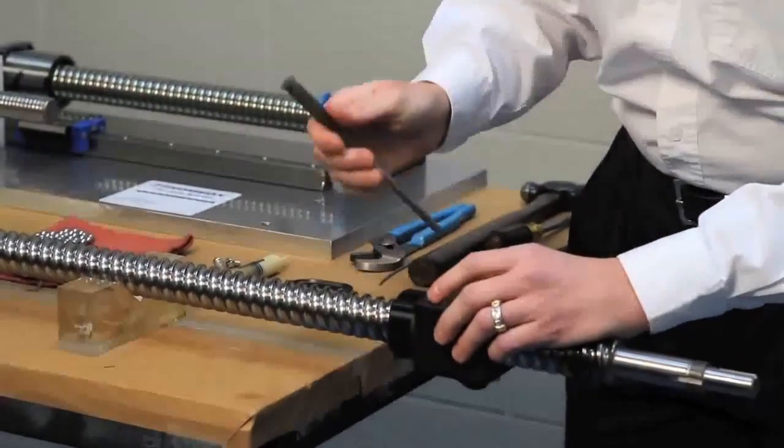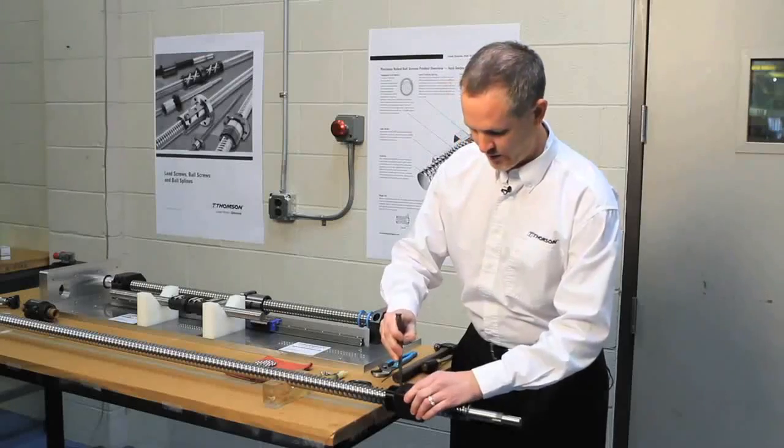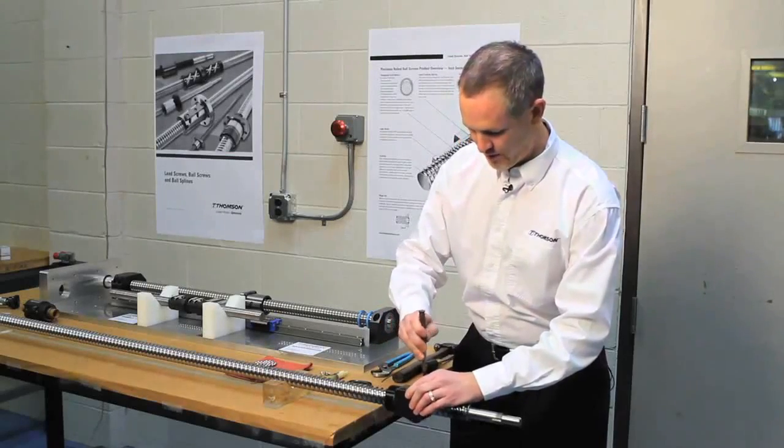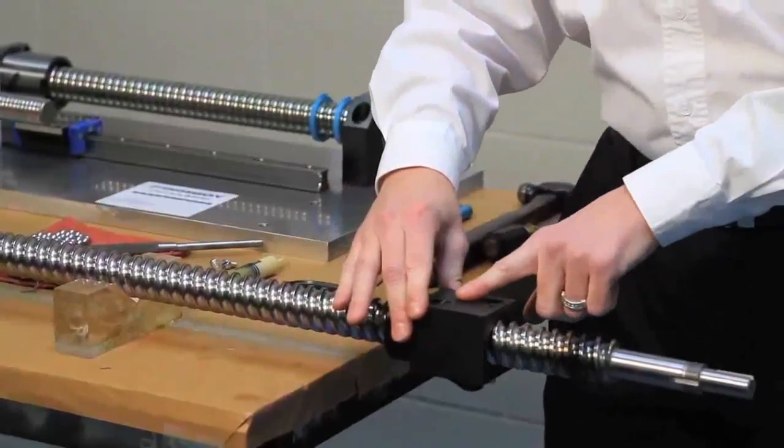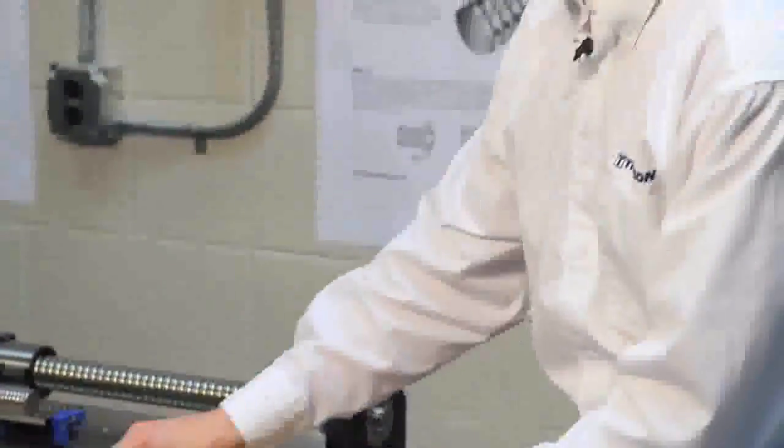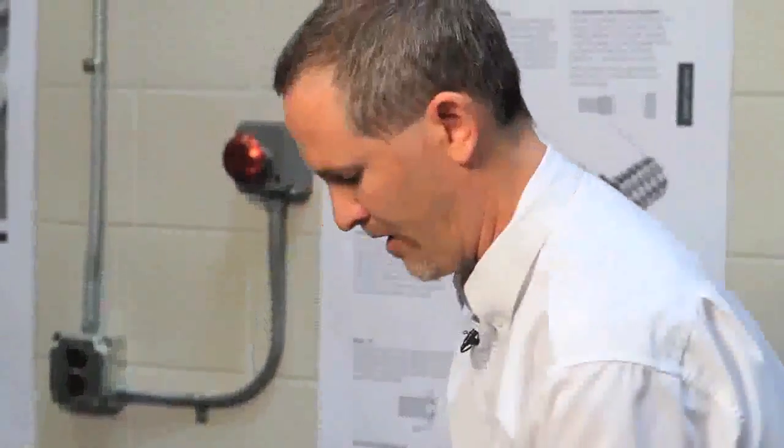So what I'm using is a punch, because this is a very large system, to feed the ball bearings into the nut. Now once I get the ball bearings into the circulation path on the screw, we'll have some extra ball bearings here.